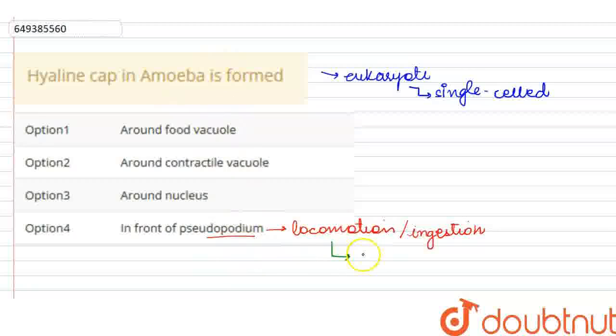When it comes to locomotion, in the time of locomotion, in the pseudopodium, there is a clear thin layer present.